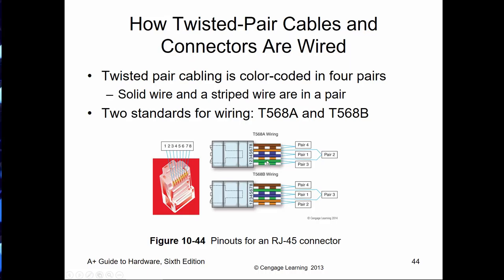Using the T568A standard, the color order is: white-green, green, white-orange, blue, white-blue, orange, white-brown, brown. Using the T568B standard, the order is: white-orange, orange, white-green, blue, white-blue, green, white-brown, brown. Essentially, all we're doing is flipping the orange and green pair depending on which standard we're using — A or B.